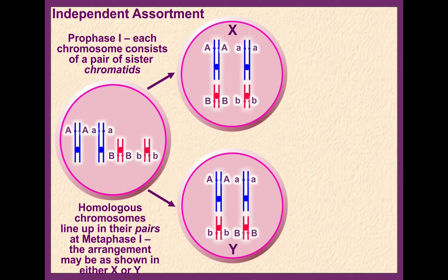The dominant A and the dominant B line up on the same side of the cell, or in Y, the dominant A and the recessive B line up on the same side of the cell. The converse is true for the other side. So four different types of gametes are possible at the end of meiosis II.